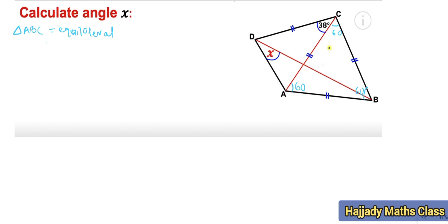Don't forget that we are calculating angle x. We can see that angle ACB is 60 degrees. This means that angle BCD is going to be 98 degrees — that is 38 plus 60 gives 98. So our angle BCD equals 98 degrees.